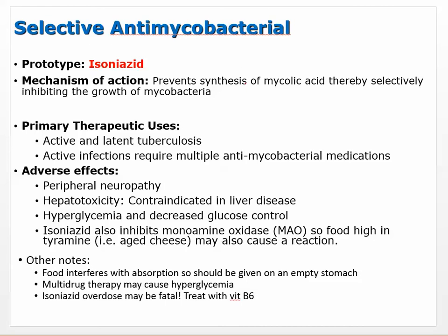Let's look at the selective antibacterial. Our prototype drug is isoniazid, and it prevents the synthesis of mycolic acid — that waxy coating. It prevents the synthesis of the molecules that make it up. Therefore, it selectively inhibits the growth of mycobacteria, because mycobacteria are the ones that have mycolic acid — that's why it's named that. The primary therapeutic use is active and latent tuberculosis.